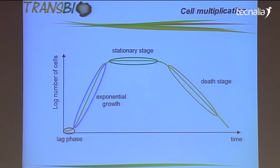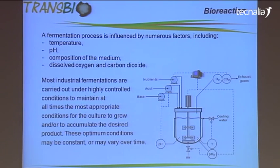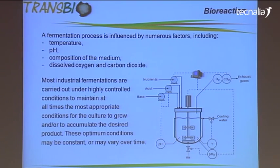So if we want to extend this exponential stage, we need to supply to the culture a set of conditions. We need to know what is the best temperature for the cell to grow, the best pH, composition of medium, concentration of nutrients, and also very importantly, the right dissolved concentration of oxygen.